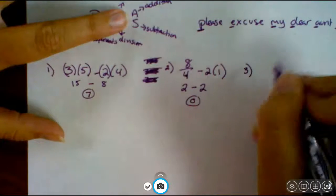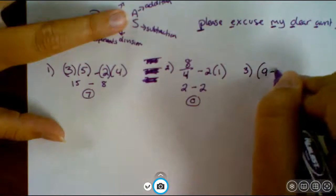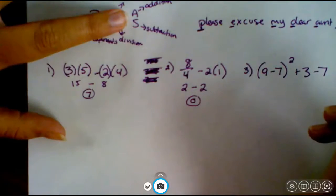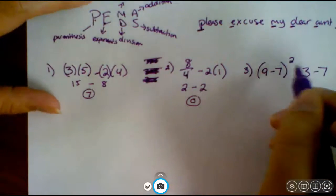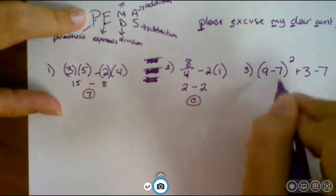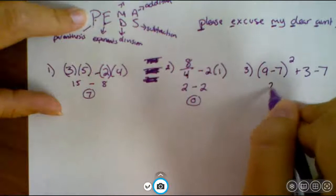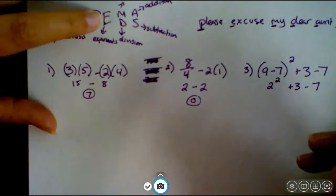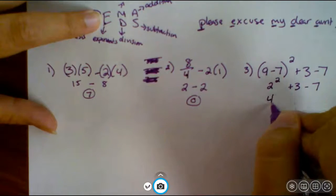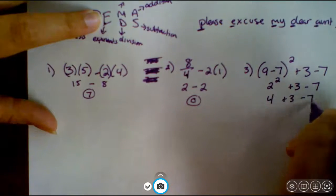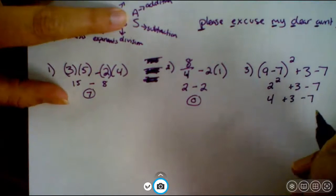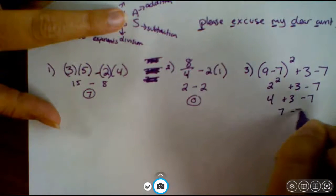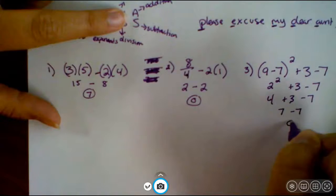Try one more like that. We have nine minus seven squared plus three minus seven. So for this one, we do have an exponent, but we're going to start with our parentheses first. So nine minus seven is two, and I'm just going to do this one step at a time so I don't lose track of my steps. Now I have an exponent, so two squared is four. Bring down the rest, and now I'm down to just adding and subtracting, so I go from left to right. Four plus three is seven. Seven minus seven is zero.